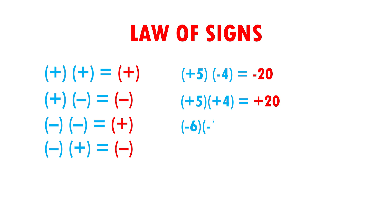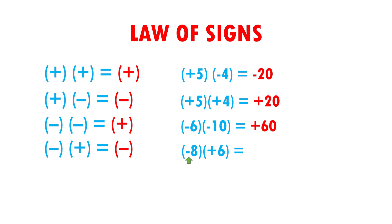Now, minus six times minus ten. Negative times negative gives me positive, and six times ten gives me 60. Our result is positive 60. Now, minus eight times positive six. Negative times positive gives me negative, and eight times six gives me 48. The result is negative 48.